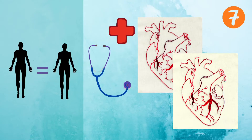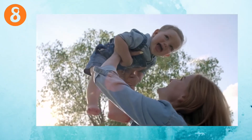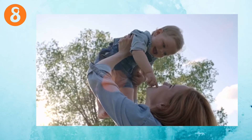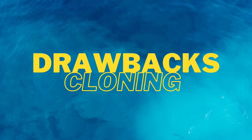Seventh, clones can be created for organ transplants. Cloning entire human beings has ethical implications since both the clone and the original would be humans with equal rights, making use of the clone's organs illegal. However, only organs cloned from cells for transplants could greatly ease the current organ scarcity issue and save millions of lives. Eighth, cloning would allow homosexual couples or infertile people to have a child that is biologically their own through implantation of adult somatic cells into an embryo.